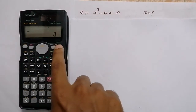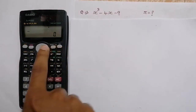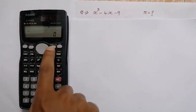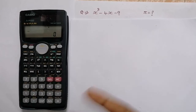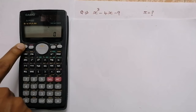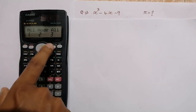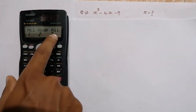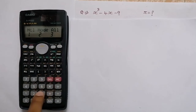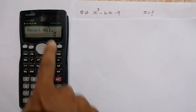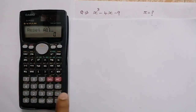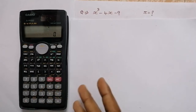Switch on the calculator, then reset it because sometimes we have done some functions in it. For resetting, press Shift, then press Mode, then you can see option 3 which is 'Reset All'. Press number 3, then press equal to two times. Now our calculator has been reset.